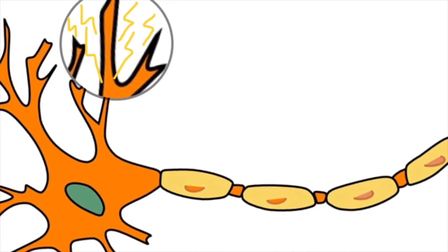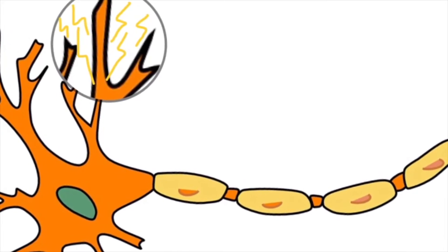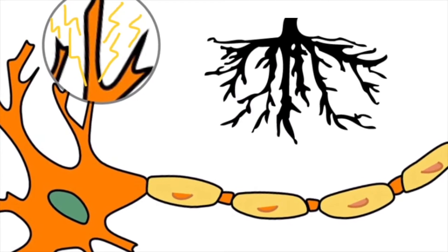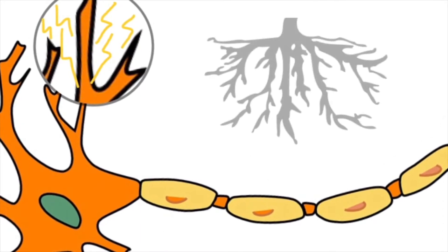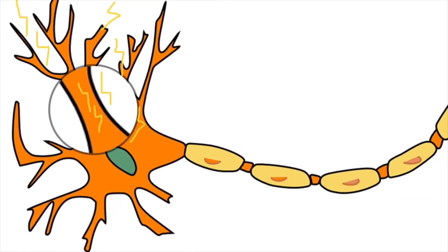Dendrites extend from the soma and receive the electrical signals or messages from other cells. Dendrites are often compared to tree roots in the way they branch out and extend from their cell. Signals enter the neuron through dendrites.